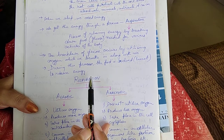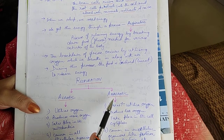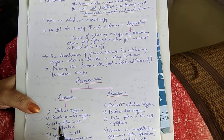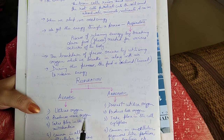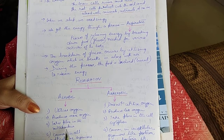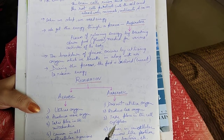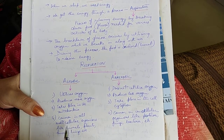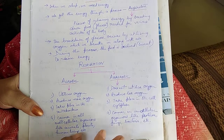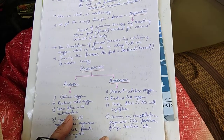Respiration, the process of releasing energy, is of two types: aerobic and anaerobic. Aerobic respiration utilizes oxygen, while anaerobic does not utilize oxygen. Aerobic respiration takes place in the mitochondria, and it is common in all multicellular organisms like animals, plants, and human beings. Anaerobic respiration takes place in the cell cytoplasm and is common in unicellular organisms like protozoa, fungi, and bacteria.